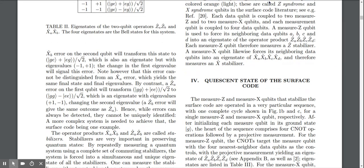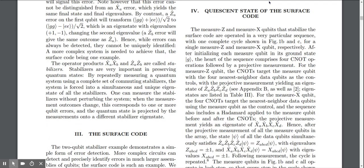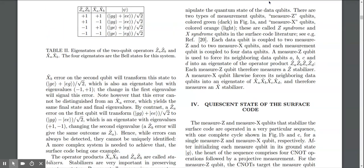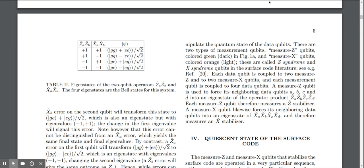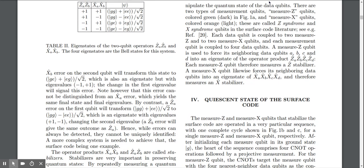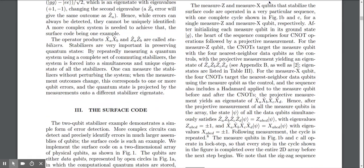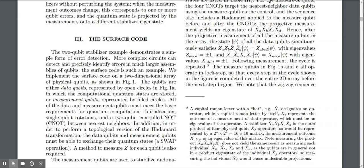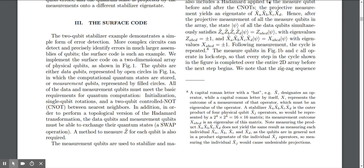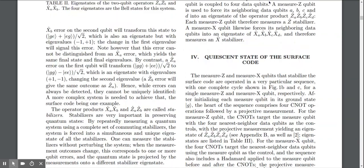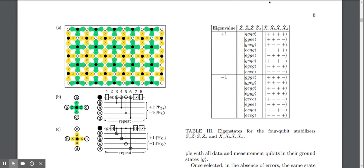One of the important aspects of the surface code is therefore a focus on error detection rather than error correction. We implement the surface code on a two-dimensional array of physical qubits, as shown in figure one.